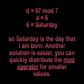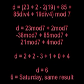You can quickly distribute the modulo operator for smaller values. D equals 23 plus 2 minus 2 times 19 plus 85 plus 85 div 4 plus 19 div 4 modulo 7.